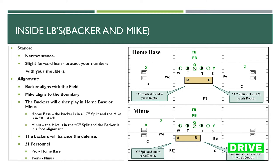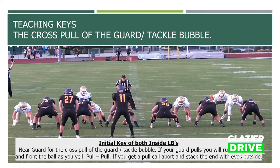If they give us a two-back set in pro formation, everything is the same except we line up in home base — that's how we ran G defense for 25 years. If they give us twins, we bounce and pull the string to minus alignment. In 21 personnel, we're either playing home base or minus. If they give us pro into the boundary, we'll minus and let our mic stay in the C split while the backer is in the A stack.